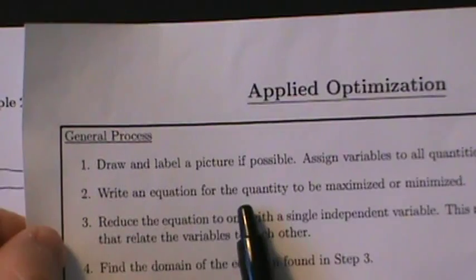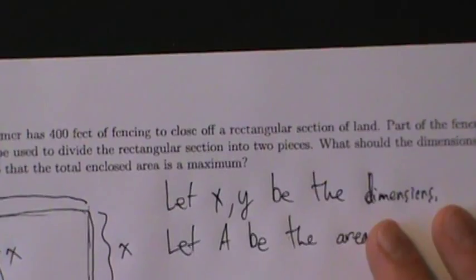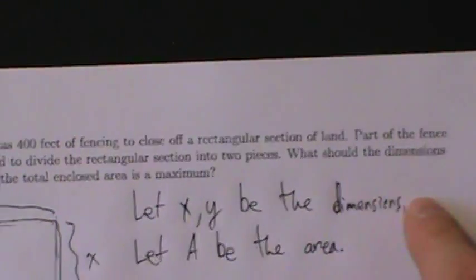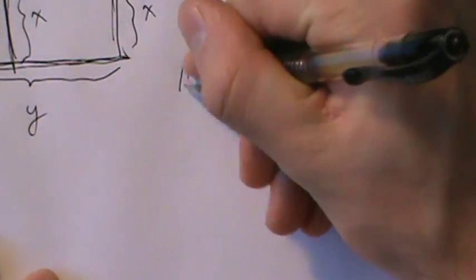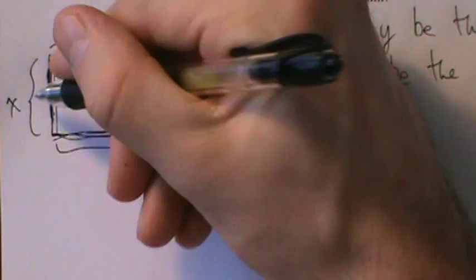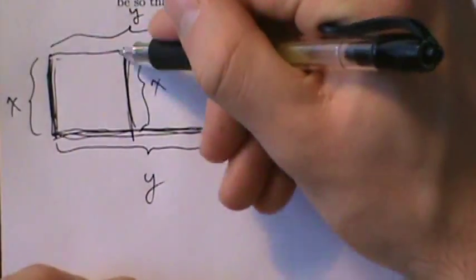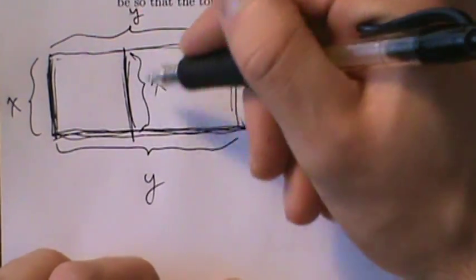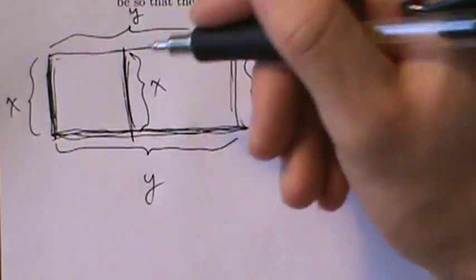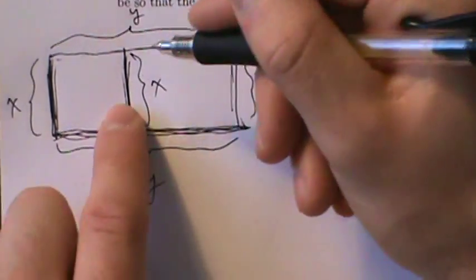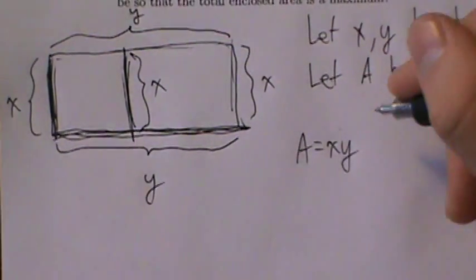Step two: write an equation for the quantity to be maximized or minimized. We're trying to maximize the area. We want to find dimensions x and y so that area A is a maximum. A is the area of the entire rectangle, so it's just x times y. Even though we have this dividing segment of x, that does not affect the area at all — it has no width to it. So the area is just A = x times y.